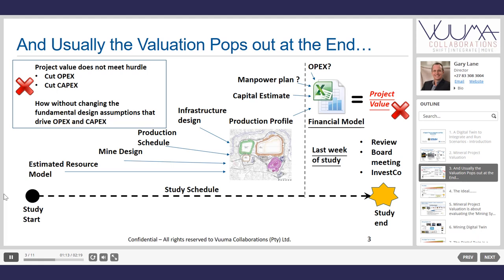Unfortunately, the financial model — which is generally an Excel model — pops out in the last week of a study. So there might be a one-year pre-feasibility study, and the financial model appears one week before the end. When the NPV doesn't meet the hurdle rate, there's a big panic in the last week to adjust it. Discussions arise like cutting OPEX by 10% or CAPEX by 10%, but the real levers are the mine design, production scheduling, infrastructure design, and equipment choice. You end up presenting numbers that are unrealistic, and the project will never be implemented meeting those performance parameters.